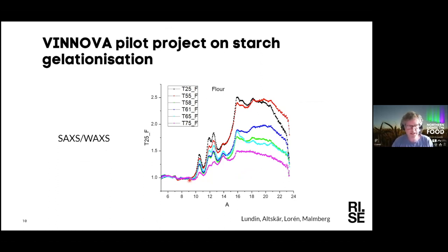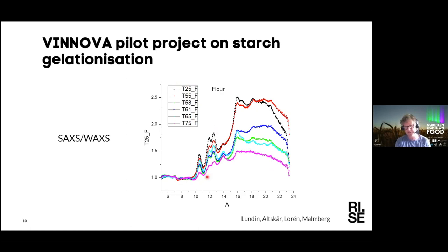This is a finalized project about starch gelatinization, where we used SAXS/WAXS techniques to look into the crystallinity of starch. What you see here is a flour from Landmann, with different peaks as a function of temperature — from 25 degrees up to 75 degrees. The peaks are quite significant for crystalline structure in starch, and you can see how they disappear at different temperatures. That is a way to understand how crystallization is influenced, and you can look into the amount of crystals with different water amounts.